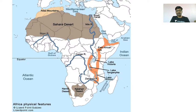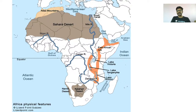Then the Zambezi River — this is the Zambezi River. Then the Nile River: it originates in Lake Victoria, flows through the Nubian Desert. This is also the Rift Valley that we have already studied.